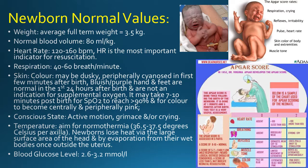The Apgar score rates respiration/crying, reflexes/irritability, pulse/heart rate, skin colour of body and extremities, and muscle tone. In 1952 Dr Virginia Apgar developed the Apgar score. It is done at one minute and five minutes after birth. The Apgar score is assessed in five parts: heart rate, breathing, reflexes, muscle tone and colour. A score of 8 to 10 is normal. A score of 5 to 7 is fairly low — mild respiratory or neurological distress should be considered. A score of less than 5 may indicate neonatal resuscitation.